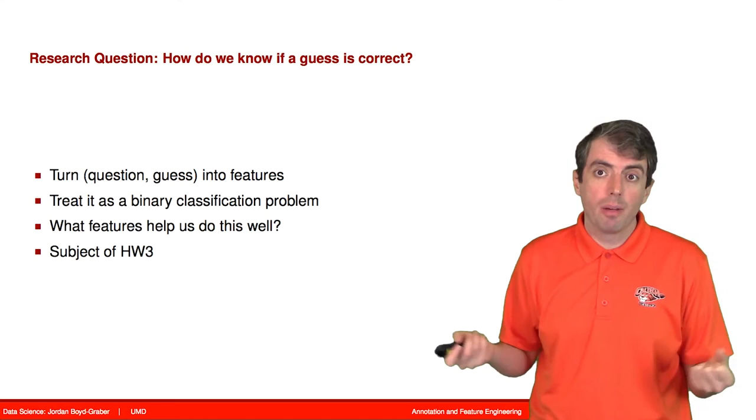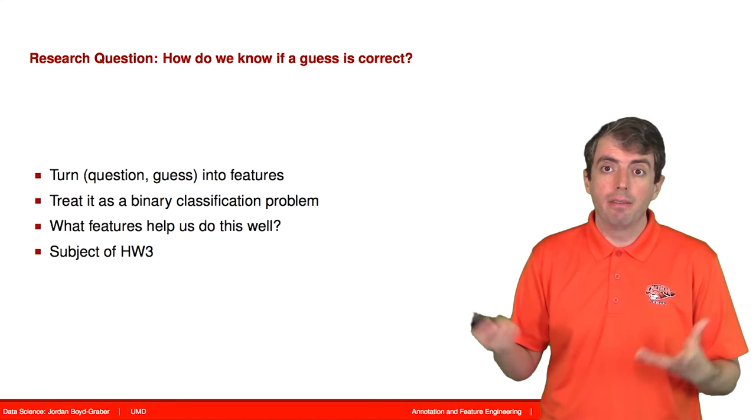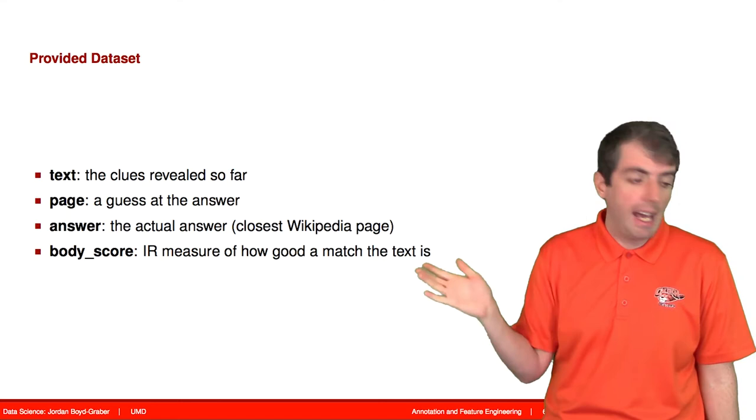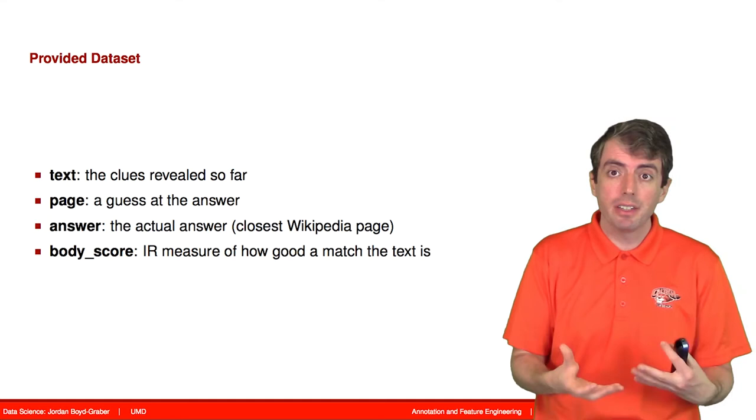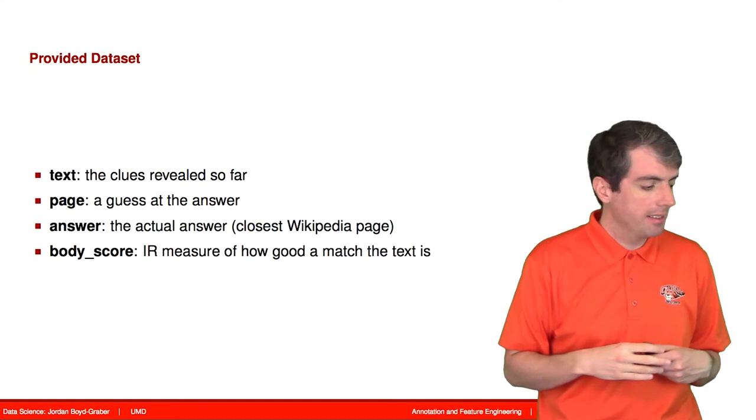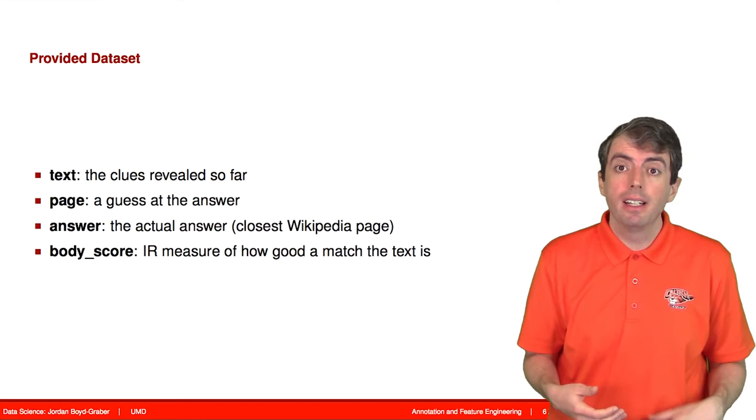So these are the kinds of things that I give as feature engineering homeworks. So the data set that I started the students off with had the clues that have been given so far, the text. You have the page. And so this is the Wikipedia page. So all of these questions have a Wikipedia page as the answer. And this is what the guesser has provided as a guess. You also have the actual answer. Because this is training data, we know what the actual answer is. So we know what should be the answer to this question.